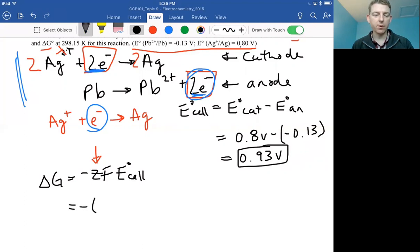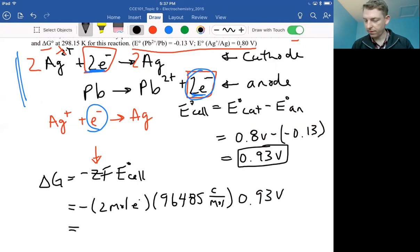So we have negative two moles of electrons times Faraday's constant, 96,485 coulombs per mole, multiplied by the standard cell potential, so that's 0.93 volts. And we end up with—what do we get for delta G?—we have negative 1.8 times 10 to the 5 joules per mole.